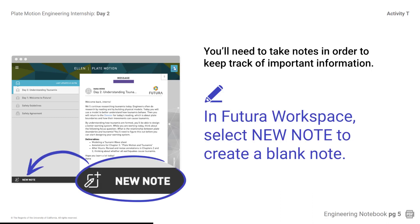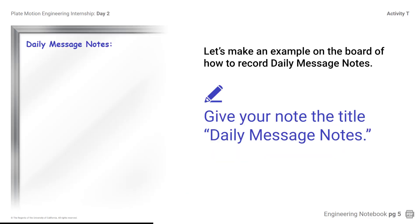You will need to take notes in order to keep track of important information. In the Futuro workspace, select New Note to create a blank note. When you have a message open, selecting New Note pins the message open and moves it to the left panel, giving you a blank note on the right. Students, create a new note in the Futuro workspace and give your note the title Daily Message Notes, so you will be able to identify it easily in the future.